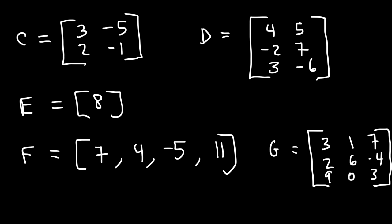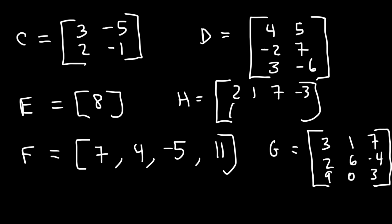Identify the order of each matrix. And one more — matrix H, which contains 2, 1, 7, negative 3, 6, negative 2, 5, and 4. Also determine which of these matrices represents a square matrix.